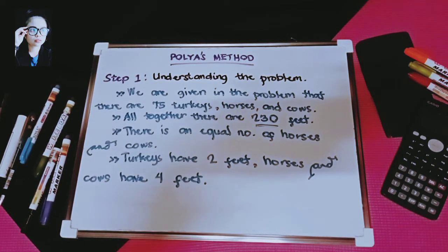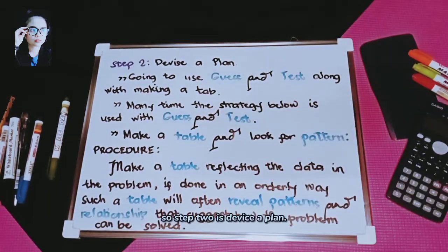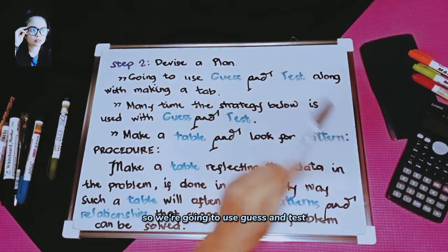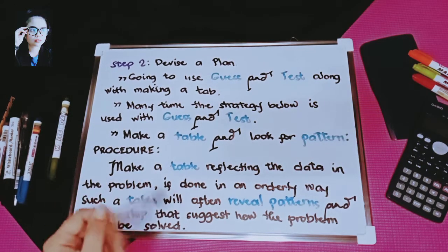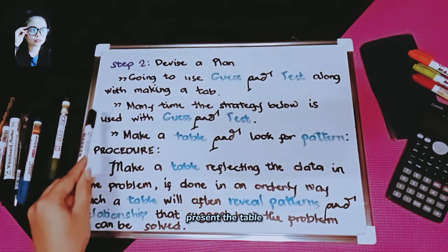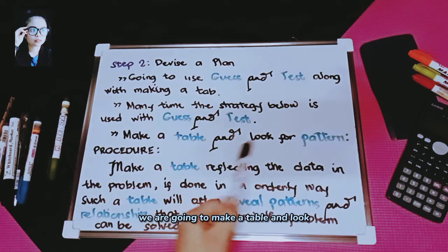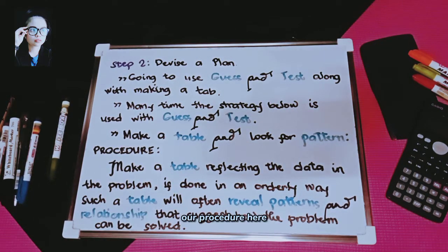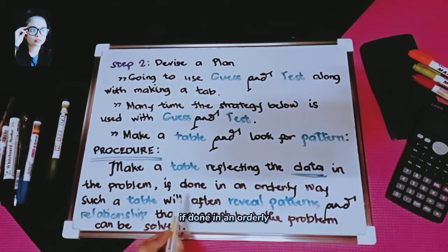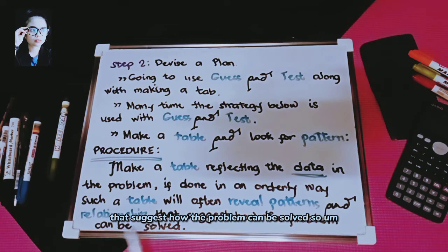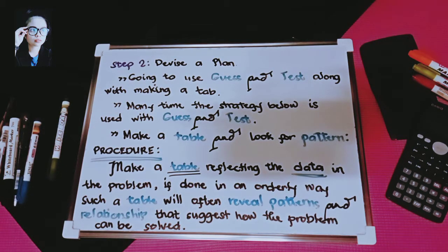Step two is devise a plan. We are going to use guess and test along with making a table. We will make a table reflecting the data in the problem. If done in an orderly way, such a table will often reveal patterns and relationships that suggest how the problem can be solved.